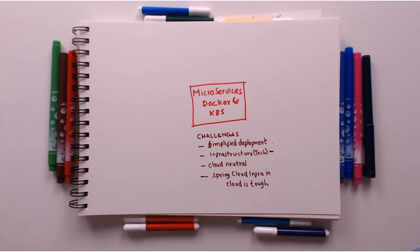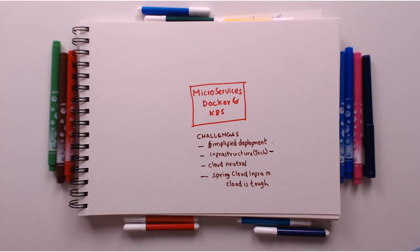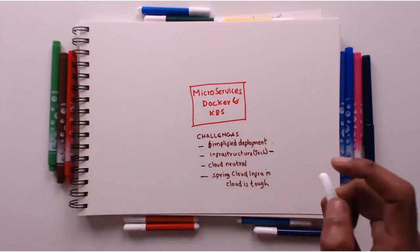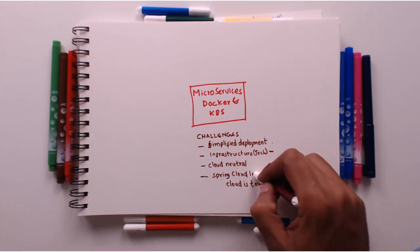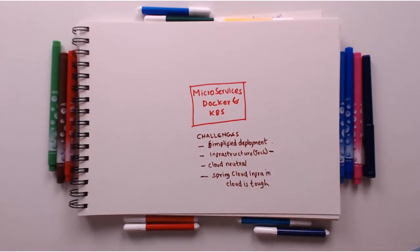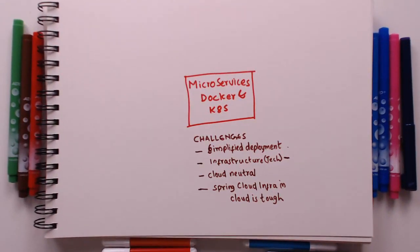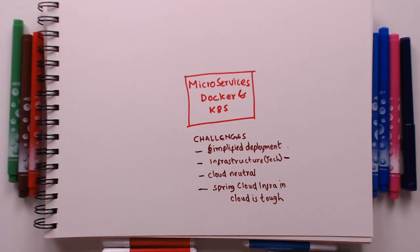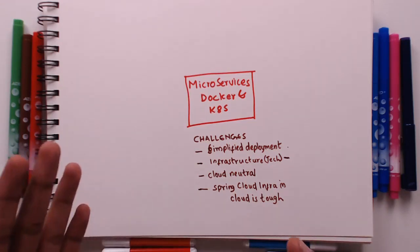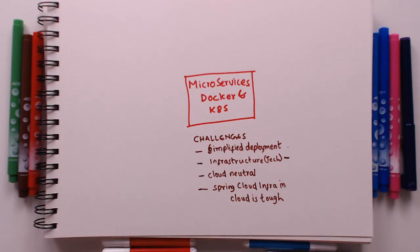Whenever we go to cloud we talk about undifferentiated heavy lifting — you should not do undifferentiated heavy lifting. This means you should focus on the business problem. As an enterprise you should be focused on solving the problems of your enterprise, not on solving technical infrastructure problems. An awesome approach would be to delegate this to either your cloud provider or to other tools like Kubernetes. In this video let's look at that journey in a little depth.